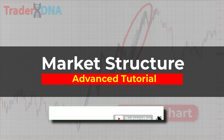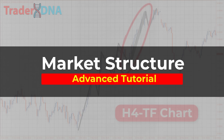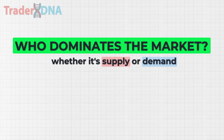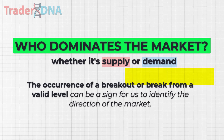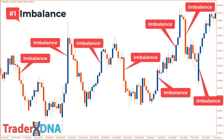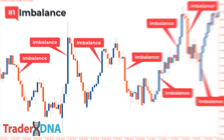When we talk about the concept of market structure, we're discussing who dominates the market — whether it's supply or demand. The key point is that there are three criteria for valid supply and demand zones. The occurrence of a breakout from a valid level can be a sign for identifying the direction of the market. The first criterion for a valid zone is an area that exhibits imbalance — a disparity between the number of buyers and sellers resulting in impulsive movements.